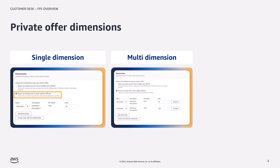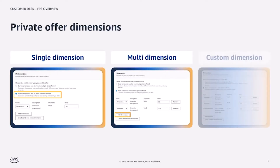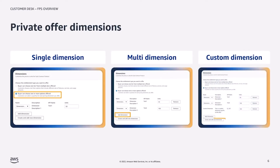The seller can click "add dimension" to include multiple dimensions, or click "create and add new dimension" to create a custom dimension for this private offer.